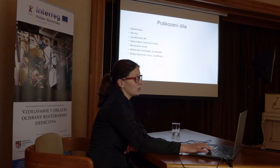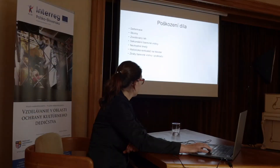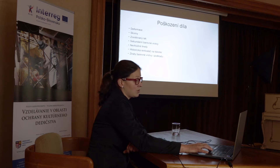Na začátku řešíme průzkum, analýzy – co vlastně se s tím dílem děje. Hledáme typy poškození na tom díle, nějaké sekundární vrstvy, nevhodné tmely. V tomhle případě byla i celoplošná rentoaláž na speciální lepidlo, kterému se dřív říkalo kleister – je to kombinace klihů a škrobů. Samozřejmě různé ztráty barevné vrstvy, ztráty podkladů.